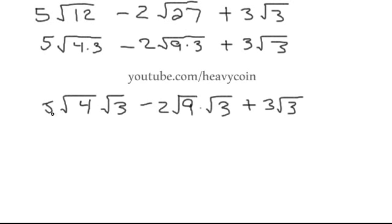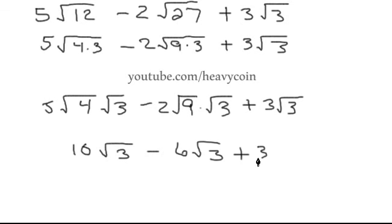Now the square root of 4 is 2, and 2 times 5 is 10 — so we get 10 times square root of 3. The square root of 9 is 3, and 2 times 3 is 6 — so we subtract 6 times square root of 3, plus 3 square root of 3. Now we just add their coefficients: 10 minus 6 is 4, and 4 plus 3 is 7. So this is all equal to 7 times the square root of 3.